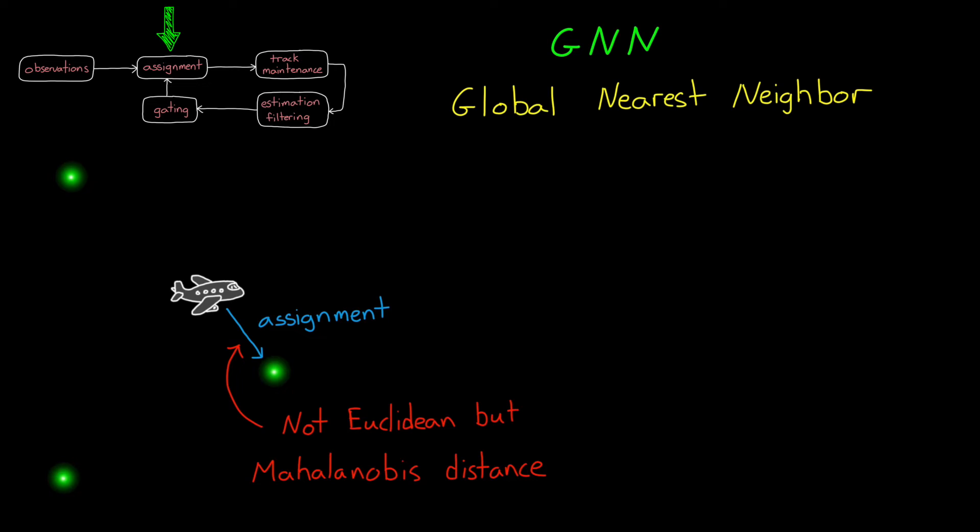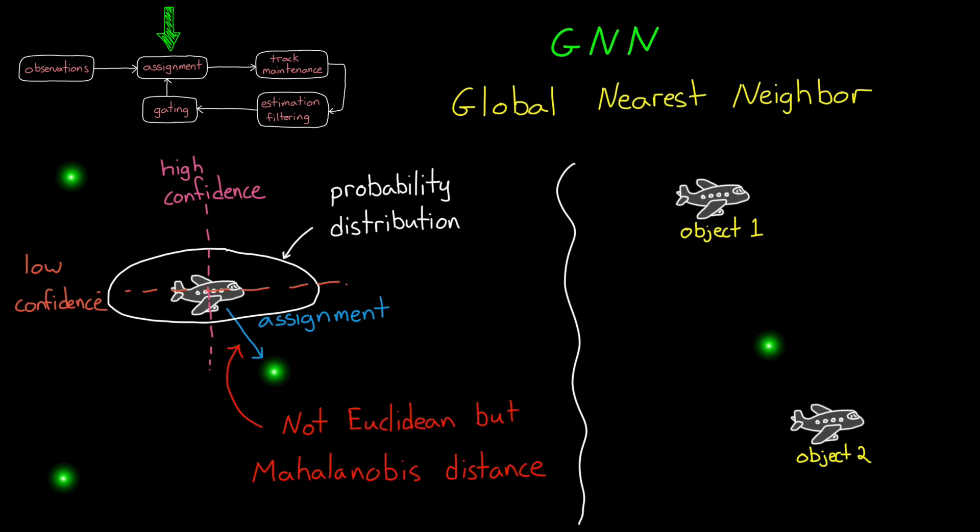And here's why. With a probability distribution like we have with both our predictions and our measurements, the lowest Euclidean distance doesn't always indicate that a prediction and a measurement are the best fit. This is because we have more confidence in our predictions and measurements in the directions with lower standard deviations.